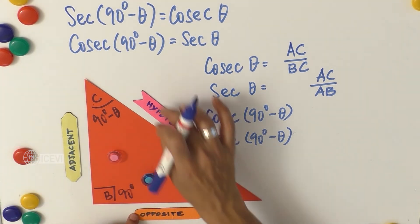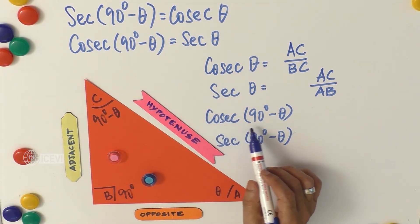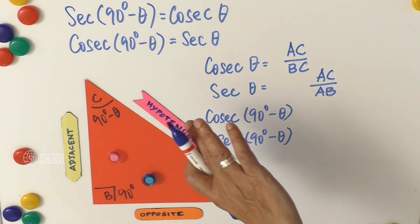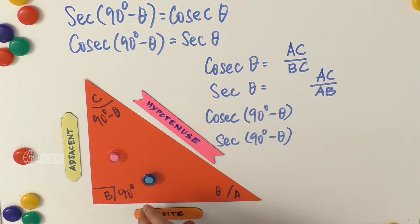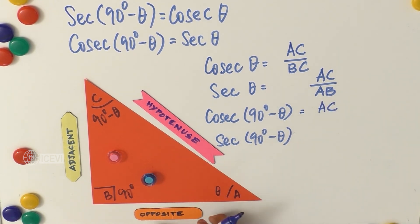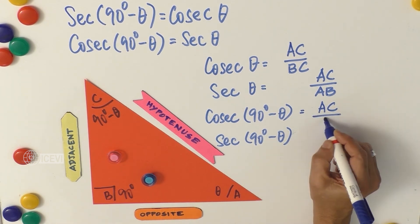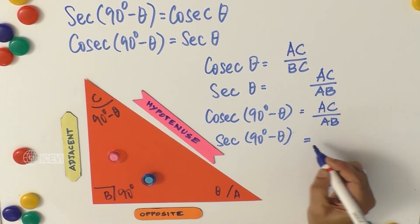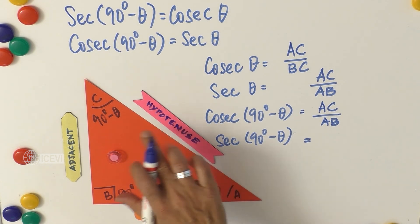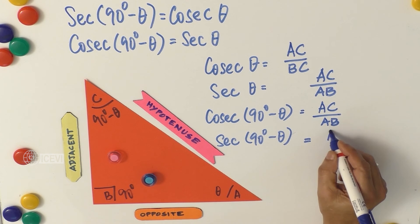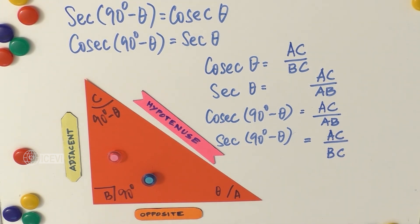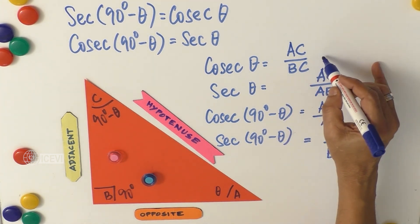Visually impaired children will be comfortable with this approach — we use different textures for the adjacent, opposite, and hypotenuse sides. Now, with 90° minus theta as the reference angle, cosecant(90° minus theta) is hypotenuse by opposite — that is AC divided by AB. And secant(90° minus theta) is hypotenuse by adjacent — that is AC divided by BC.